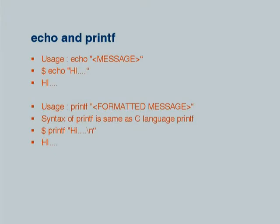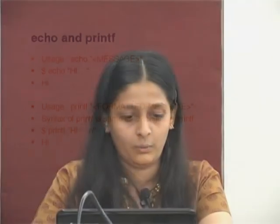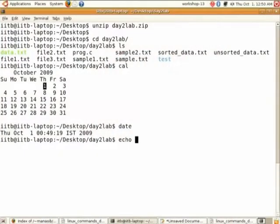The next command is echo and printf. Echo followed by a message in double quotes will print that message on the screen. If you type echo hi, it will print hi on the terminal. The date command can also be used to set the date, but it needs root privileges.